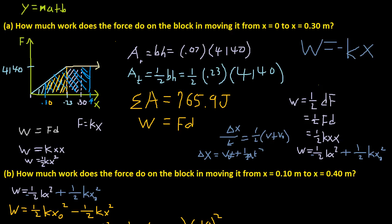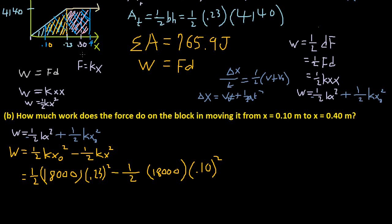And this one is a square, so we can just do base times height. And base is just 0.4 minus 0.23, which is just 0.17, times the height, which is, so work equals height, which is 4140.